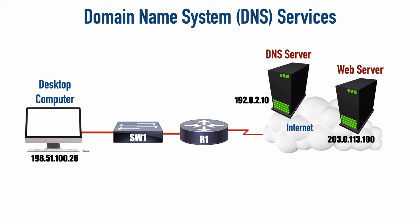So we've got to have some translator that sits in the middle that says the IP address corresponding to kwtrain.com is this IP address. In this example, the desktop computer wants to go to the web server at kwtrain.com, and it does not know that the web server's IP address is 203.0.113.100. It just knows that it wants to go to kwtrain.com, but it does know the IP address of a DNS server at 192.0.2.10 — learned either by manual configuration or via DHCP.